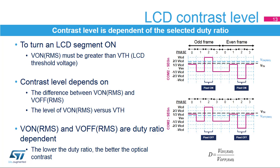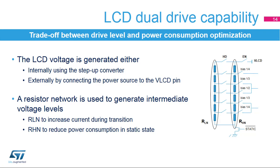As a consequence, to provide a better contrast and a greater separation between V-on RMS and V-off RMS, when the multiplexed rate increases, the LCD voltage must be increased. Make sure the LCD controller configuration matches the LCD display needs in terms of segment and common terminals; otherwise, this could result in a lower contrast. In the LCD controller, the power supply source may come from either the internal step-up converter or from an external voltage source applied on the VLCD pin. When the step-up converter is selected as VLCD source, the VLCD values can be chosen independently of the VDD value via the contrast control bits in the LCD FCR register. If an external source is selected, the internal boost circuit or step-up converter is automatically disabled to reduce power consumption. In both cases, the intermediate voltage levels required for the common and segment waveforms are generated thanks to resistor networks — one with low-value resistors (RLN) for high-drive capability, and the other with high-value resistors (RHN) for low-drive capability, which are used respectively to increase current during transitions and to reduce power consumption in static state.